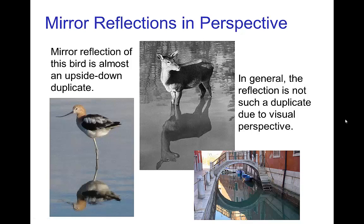Now, mirror reflections, you should realize that they are not exact duplicates. Of course, there is visual perspective that has to be accounted for. So this first image of the bird is nearly a top-down duplicate, but we see with this deer in the water that by perspective we can see underneath the deer. Similarly, we can see underneath the bridge in its mirror reflection.